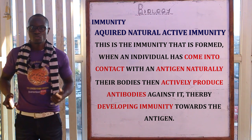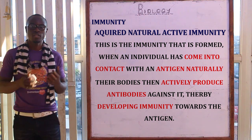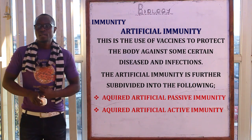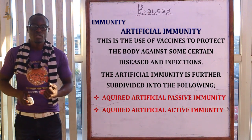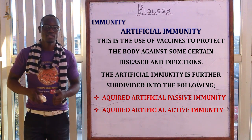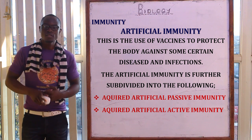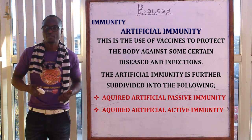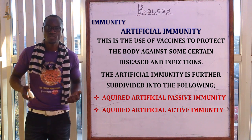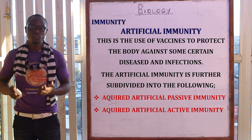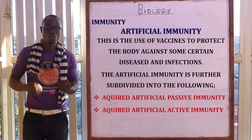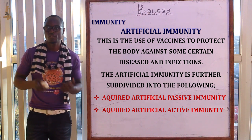The next type is artificial immunity, which mainly involves the use of vaccines to protect the body against certain diseases. Artificial immunity is further subdivided into two subtopics: the first is acquired artificial passive immunity and the second is acquired artificial active immunity.